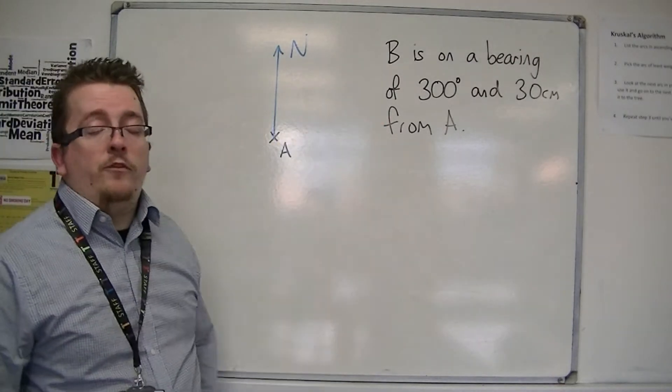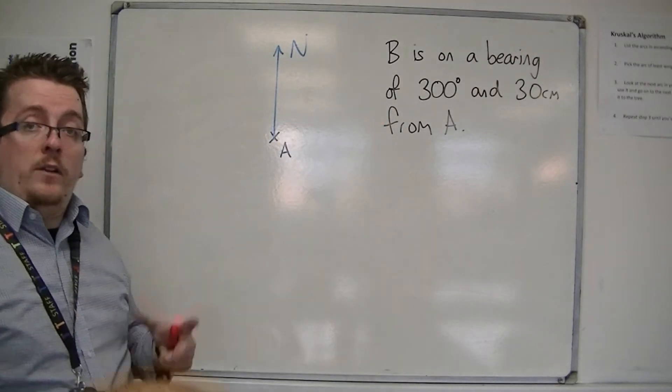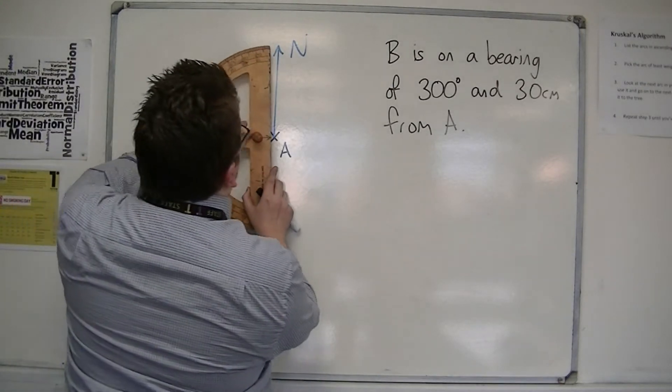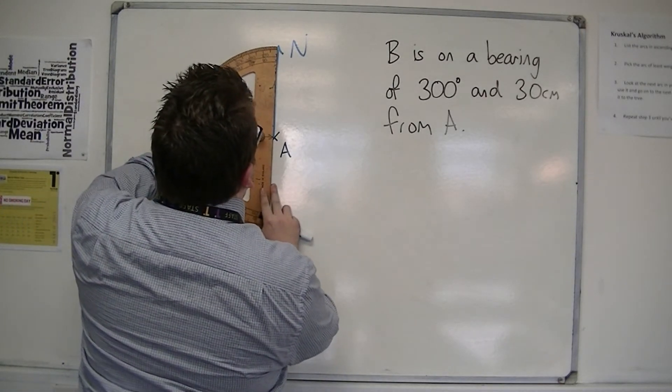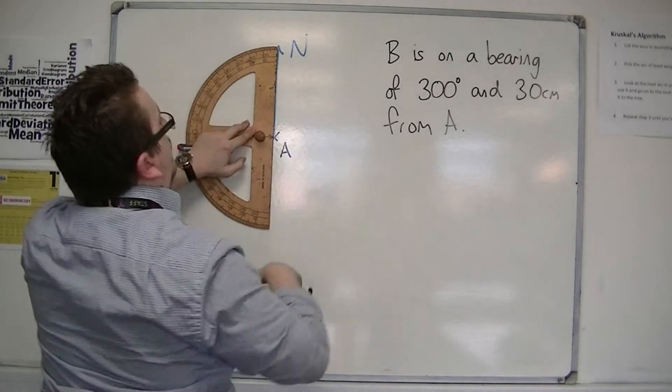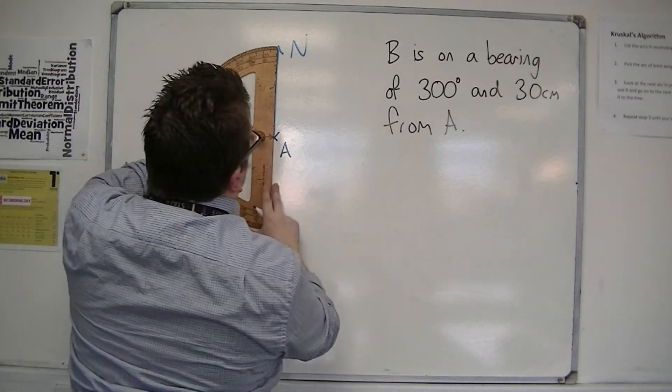I can subtract it from 360 degrees, which is 60. So if I measure an angle that is 60 degrees anticlockwise from north, then I should have the correct angle.